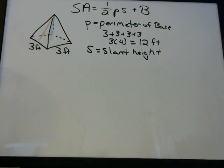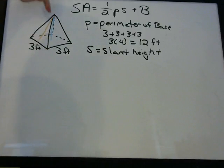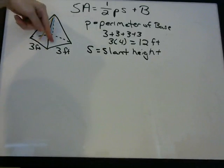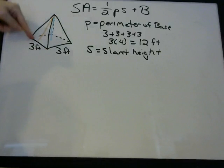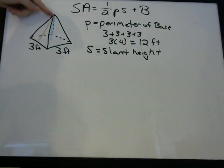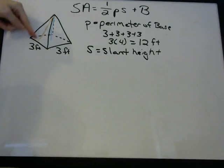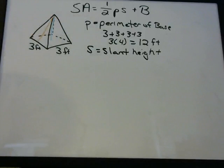The height is how tall the pyramid is, which you measure from the top straight down to the middle. The slant height is how tall this triangular side is, which is going to be different from the height.